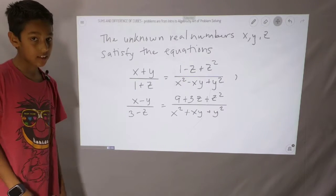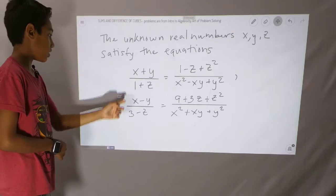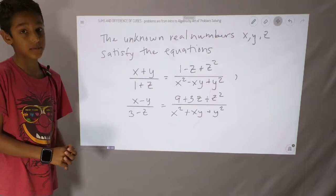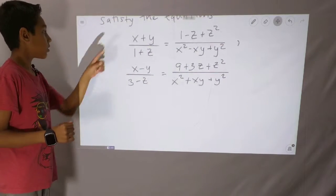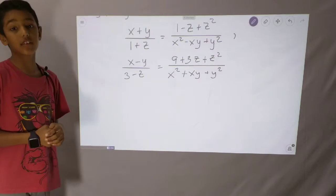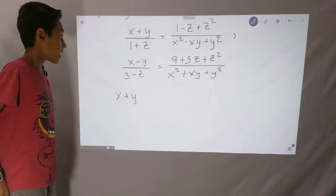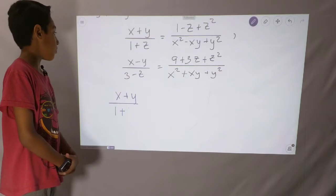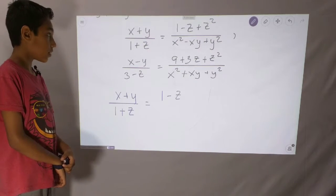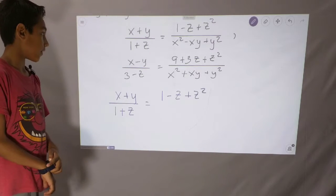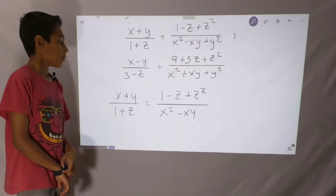So now we have our second and final problem. The unknown real numbers x, y, z satisfy the given equations. In this problem, we're going to find x only. Let's do the first equation first, then the second one. We write: x plus y over 1 plus z equals 1 minus z plus z squared over x squared minus xy plus y squared.